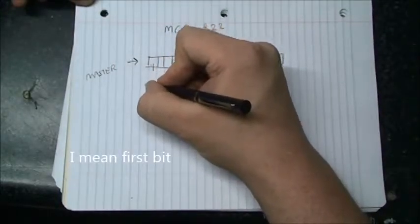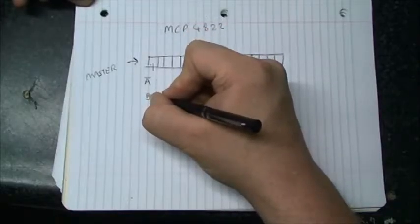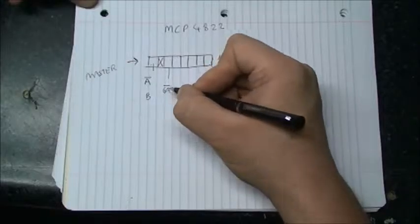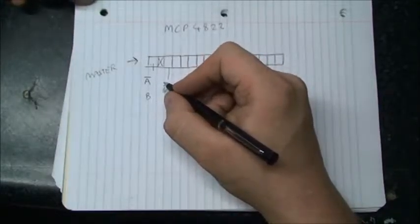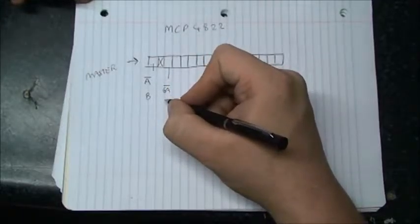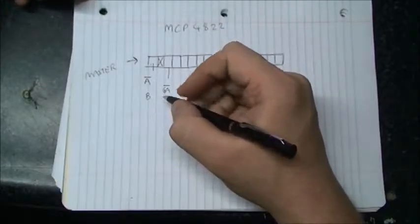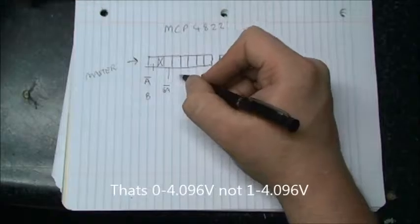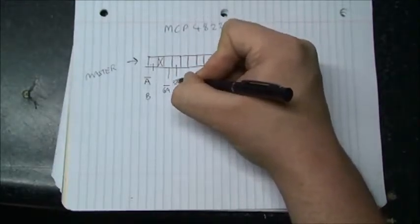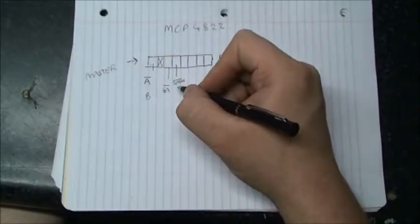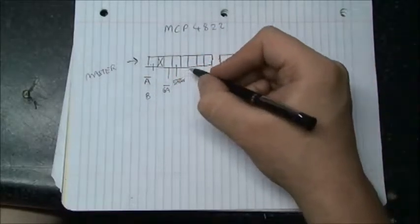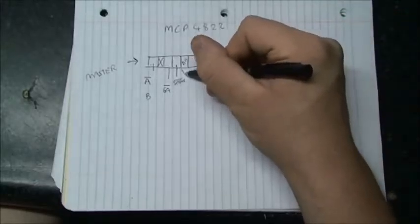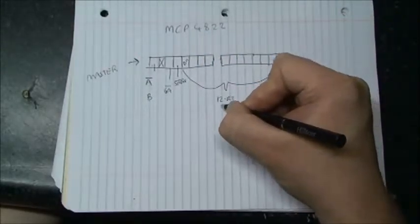Then basically, this first channel, a low will select channel A, and a high will select channel B. This one, it's not used. This here is a gain bit. Now, if it's a 1, then it'll be 0 to 2.048 volts. And if it's a 0, it'll be 1 to 4.096 volts for the scaling. And the next one, we have the shutdown bit. If it's a 1, the channel's active. If it's a 0, you'll get 0 volts out, no matter what you tell it to go.